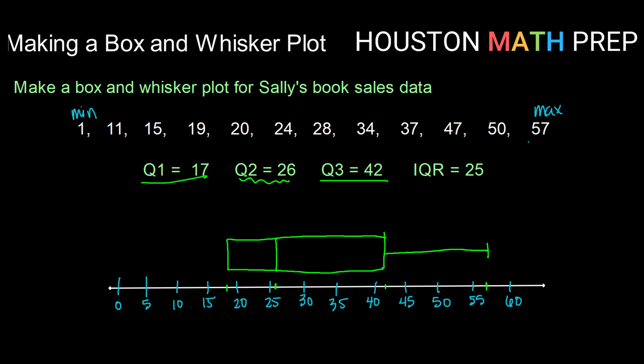And same thing down here at my minimum value of 1, drawing a vertical line, connecting up to my box. So there we have a box and whisker plot for Sally's book sales data. Catch you guys in the next video.